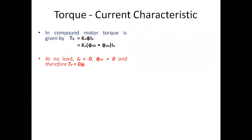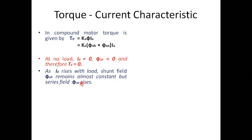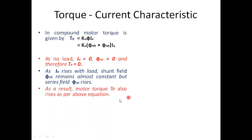At no load, Ia is almost zero, so Φ_SE is zero and therefore Te is zero. As Ia rises with load, the shunt field flux Φ_SH remains almost constant like in a shunt motor, but the series field flux Φ_SE will rise. As a result, the motor torque also rises as per the torque equation.